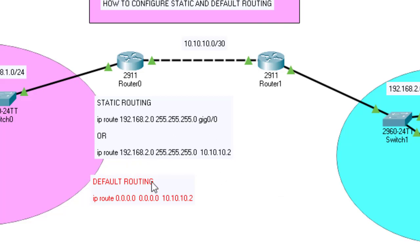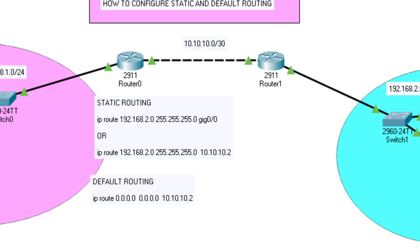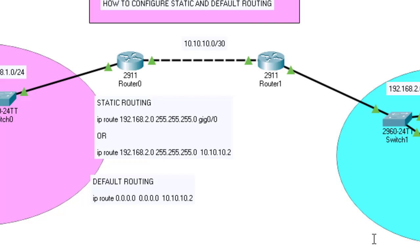Let's go to router 1 and do the same. For router 1, the command is the same — what changes is the IP address of the next hop, which is .1 here. Whenever this router receives any packet, it will forward all those packets to that next hop. Very simple — static routing and default routing are very similar.